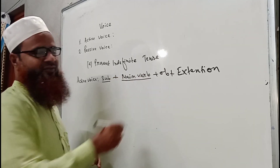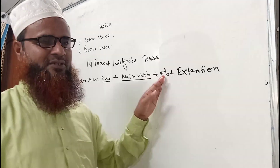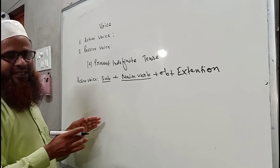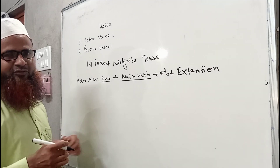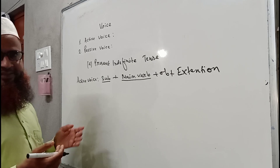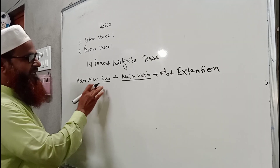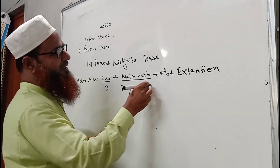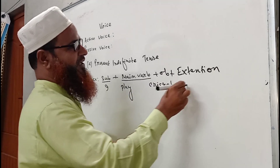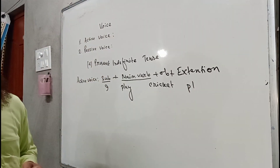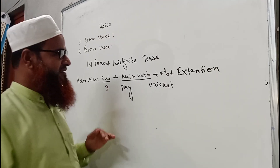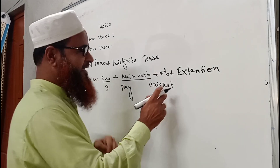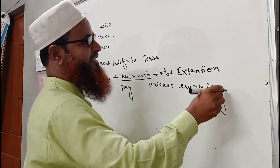The structure of present indefinite tense in active voice is: subject, then main verb, then object, and if there are any other words we write them as an extension. For example: 'I play cricket every day.' Here 'I' is the subject, 'play' is the main verb, 'cricket' is the object, and 'every day' is the extension.